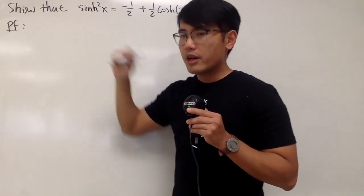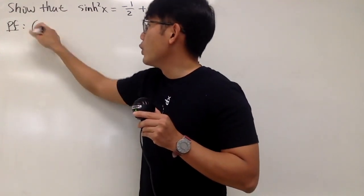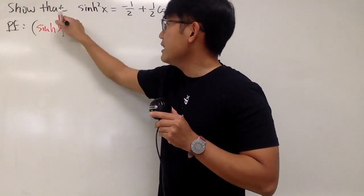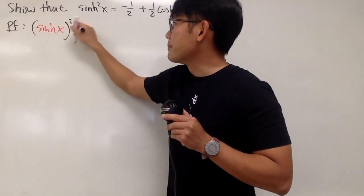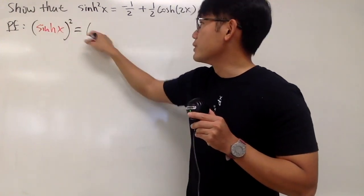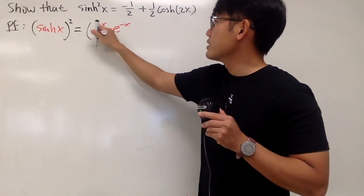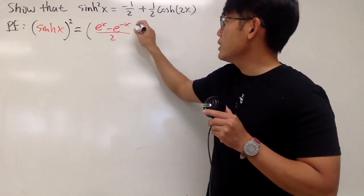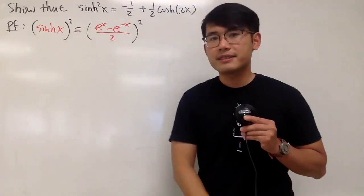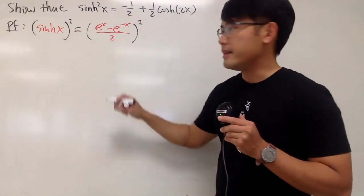This right here means parentheses with sinh x inside, raised to the second power. Inside here, we can just use e to the x minus e to the negative x, over 2, to help us out for the sinh x. Now we just have to expand it.